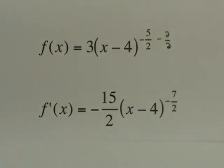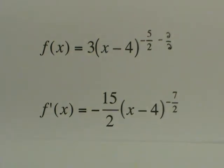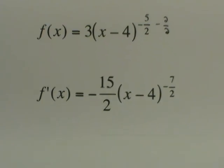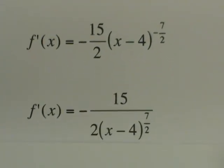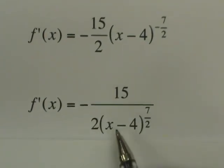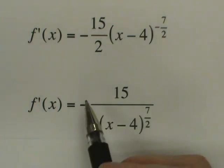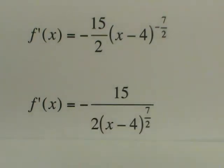And then of course the last step is to get rid of that negative exponent, drop the terms back down to where they're supposed to be. And so I'm going to call this 15 over 2, x minus 4 raised to the 7 halves. And notice I did not forget my negative, it's in front of the fraction. And that would be my final step for this problem.